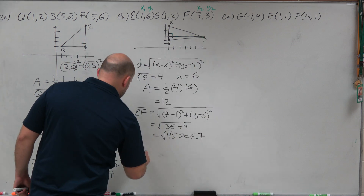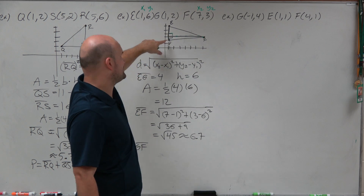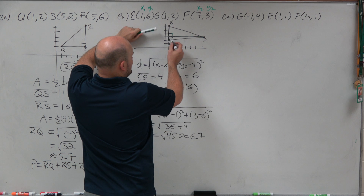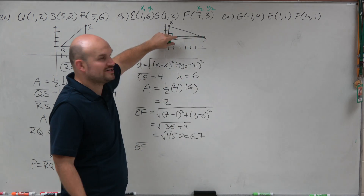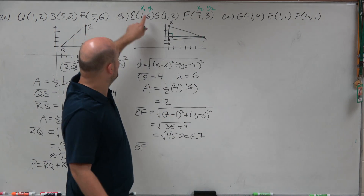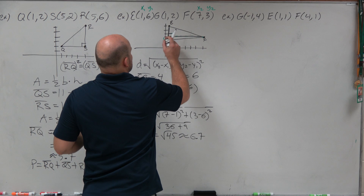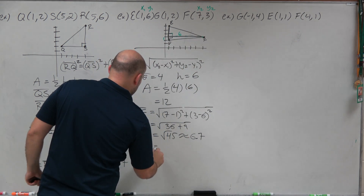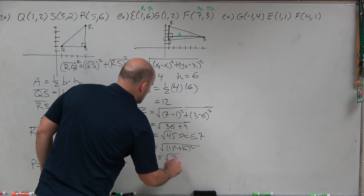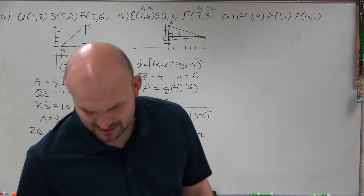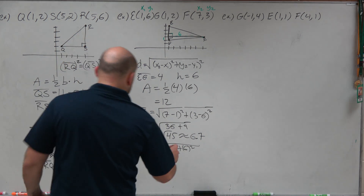For GF, since I created a right triangle by drawing the height, I can use the Pythagorean theorem with the height of 6 and a horizontal length of 1. That's equal to the square root of 1 squared plus 6 squared, which equals the square root of 7, approximately 2.6.